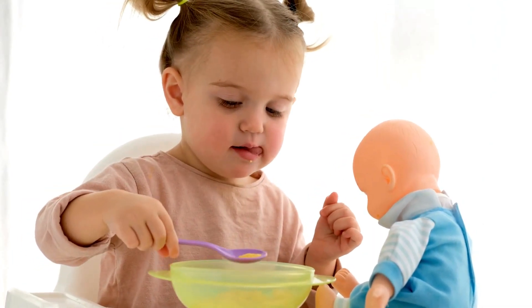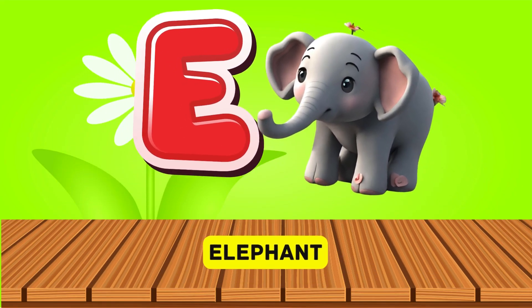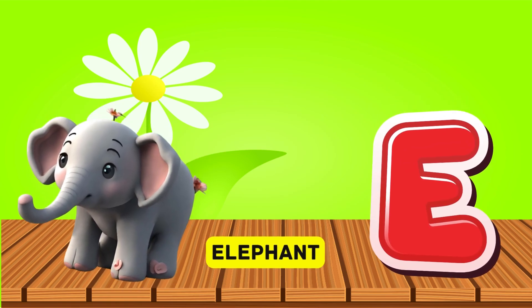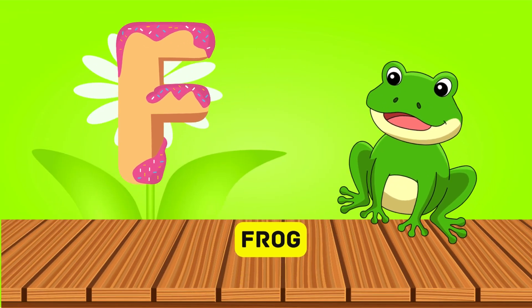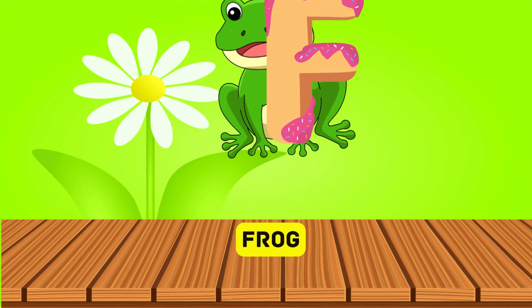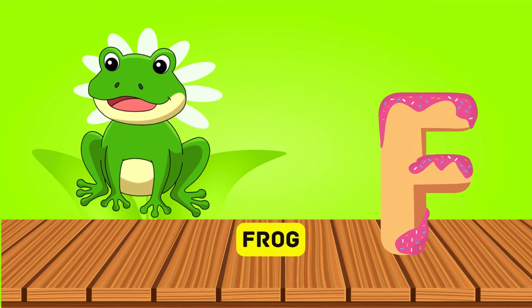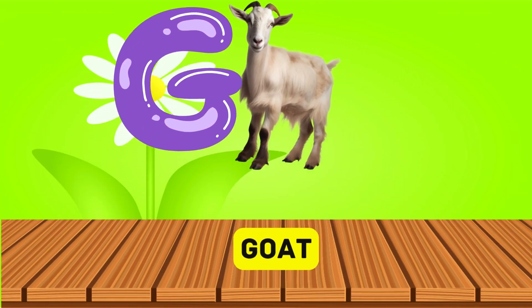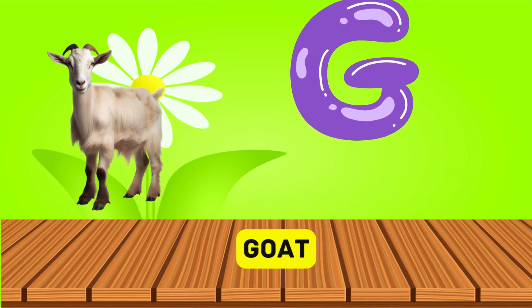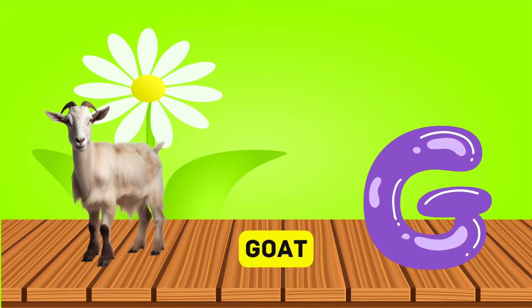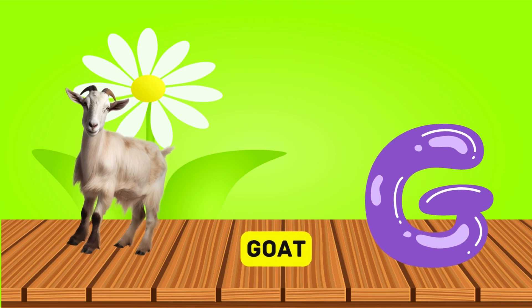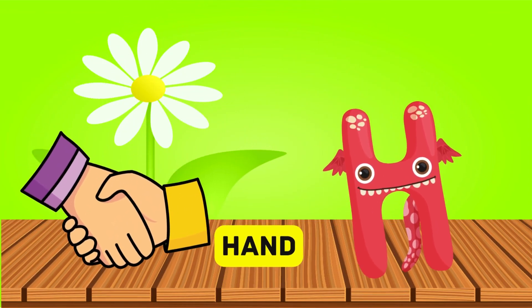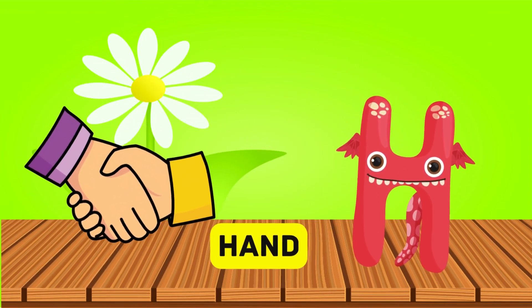E is for elephant, e-e-elephant. F is for frog, f-f-frog. G is for goat, g-g-goat. H is for hand, h-h-hand.